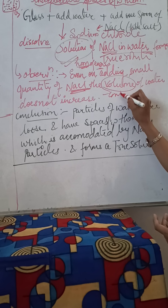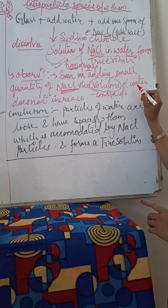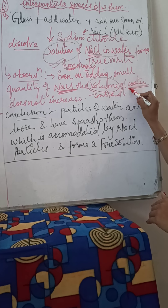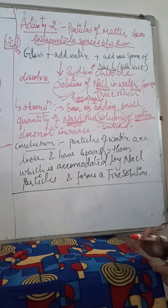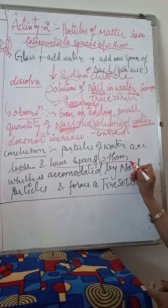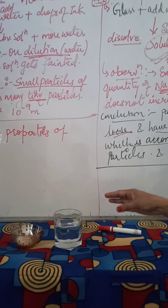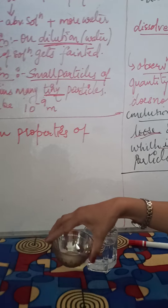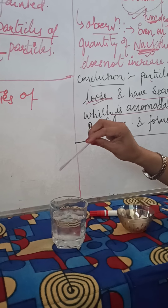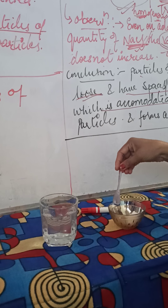We can explain this property with the following experiment. We need a glass, then add water into it, then add one spoon of table salt, which is known as NaCl — the chemical name is sodium chloride, formula NaCl, and it has an ionic bond. On adding table salt to water, on dissolution, we get a solution of NaCl in water. This solution is a true solution — a homogeneous solution. Homo means same; whenever particles are completely mixed and form a clear solution, it is known as a homogeneous solution.